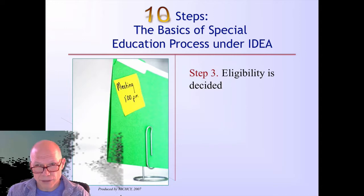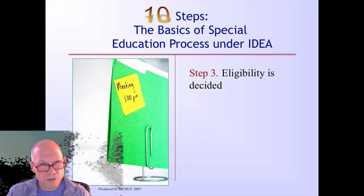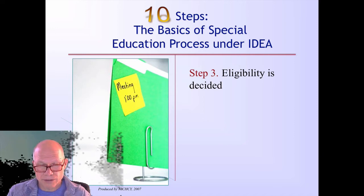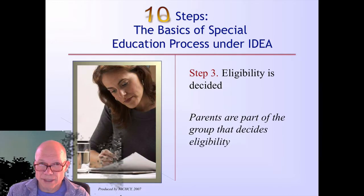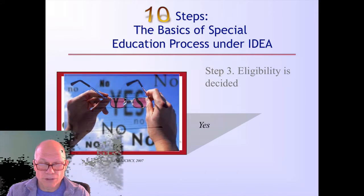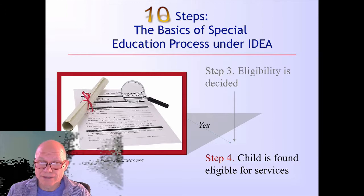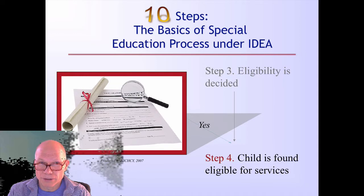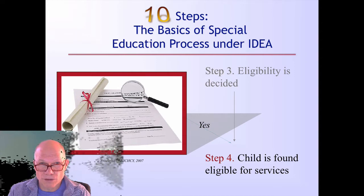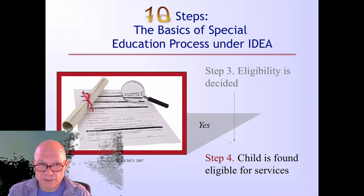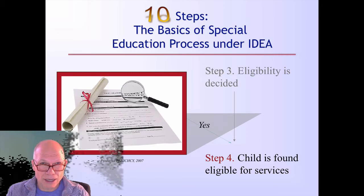After the assessment is done for eligibility, then eligibility is decided. Whether or not a child is considered a child with a disability, which is a very specific designation that we'll also read about later on in the semester. Parents, and even the student, are part of the group that decides eligibility. But it's also going to include a special education teacher, probably the administrator for the school, the principal or assistant principal, the school psychologist, or someone who can interpret the assessment results, some general education teachers, and then of course the parent and the child, if appropriate.